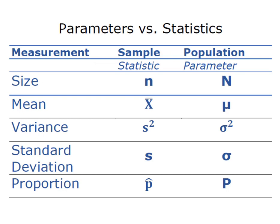So what I have here is a list of very common measurements and the corresponding notation. For size, for example, the sample statistic or the sample size is denoted by small n whereas the population parameter or the population size is always capital N.